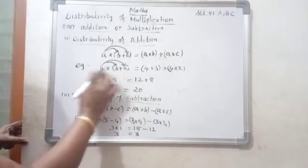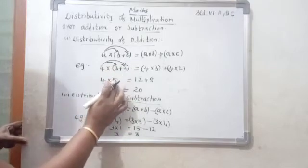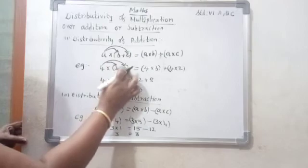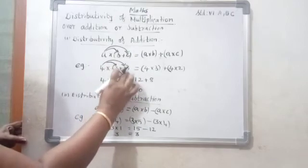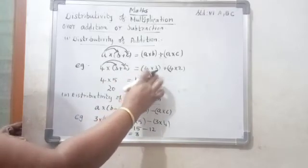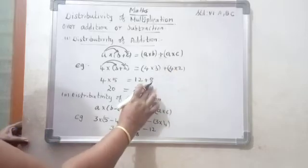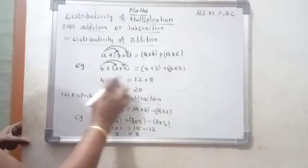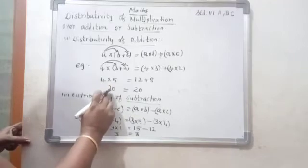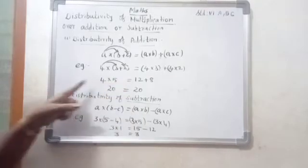Now check the answer. 4 into 3 plus 2: what is the value? 3 plus 2 equals 5, so 4 into 5 equals 20. Now first product number: 4 into 3 equals 12. Second product number: 4 into 2 equals 8. So 4 fives are 20, and 12 plus 8 equals 20. So LHS equals RHS.